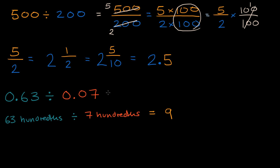This is going to be equal, this is going to be equal to nine. Seven times nine is 63. So seven hundredths times nine is going to be 63 hundredths.